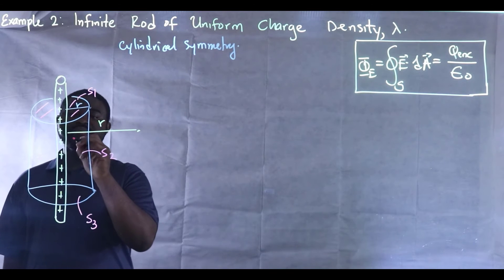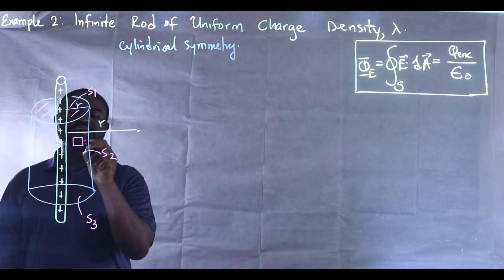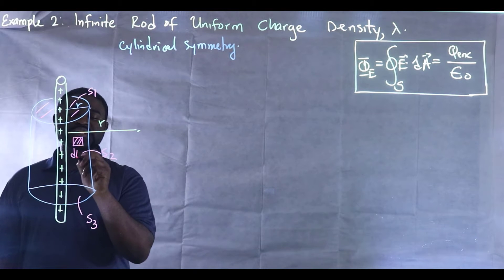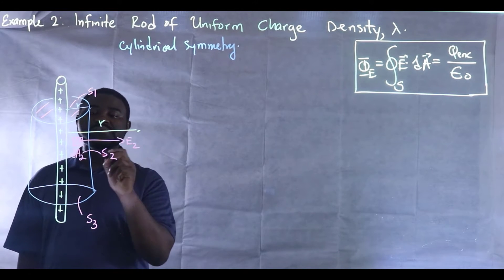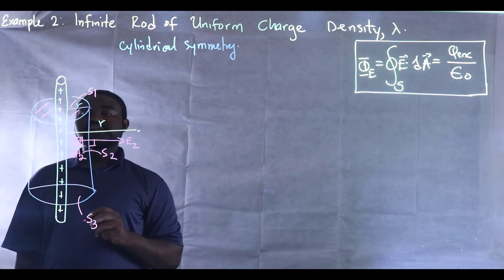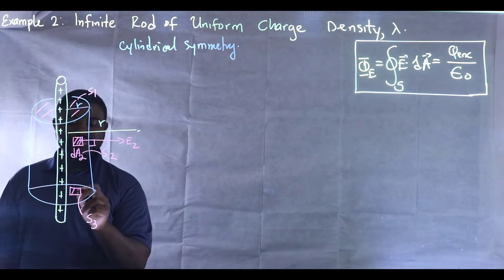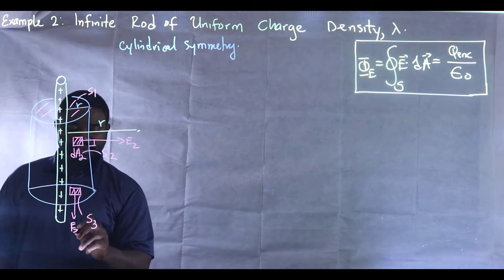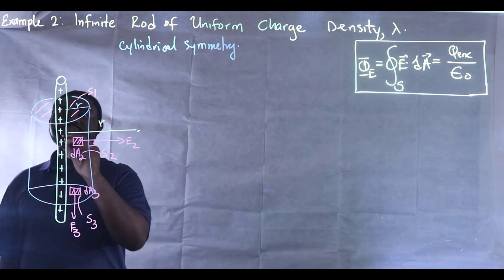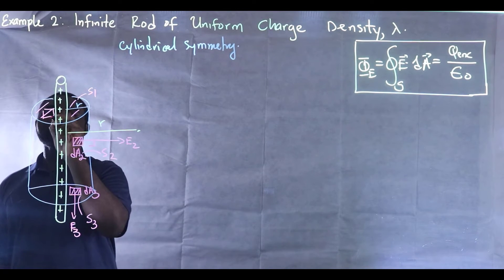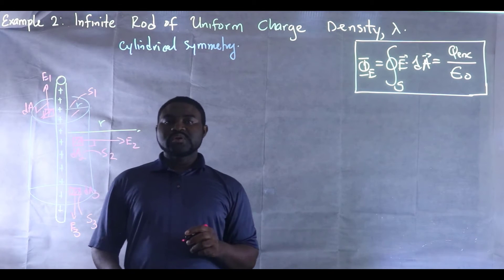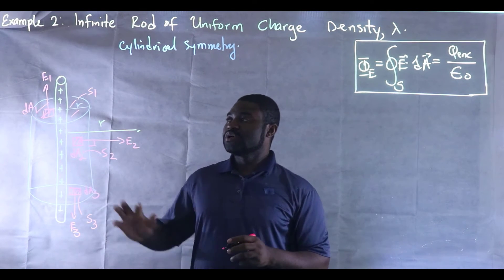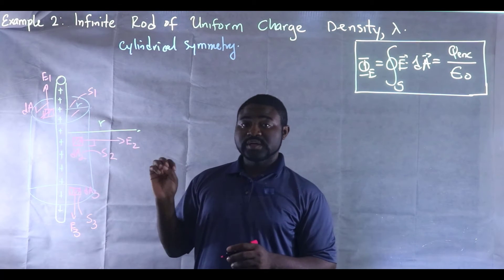So if we choose an element here, this will represent the dA2. The electric field is kind of outward. This is E2. This is at right angles. Similarly, this is E3. This is dA3. And we have here E1 and we have here dA1. So we need to calculate the electric flux through S1, S2, and S3.